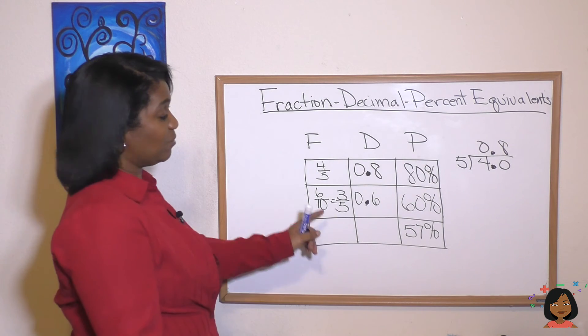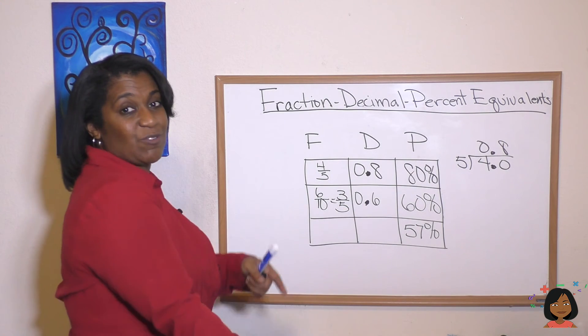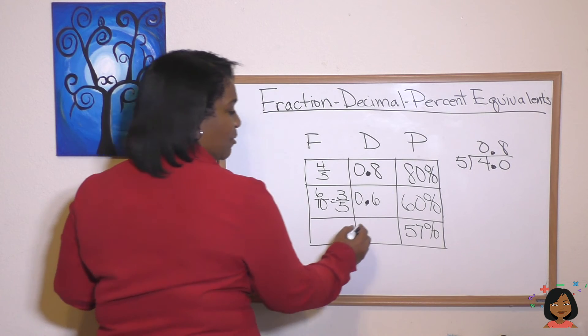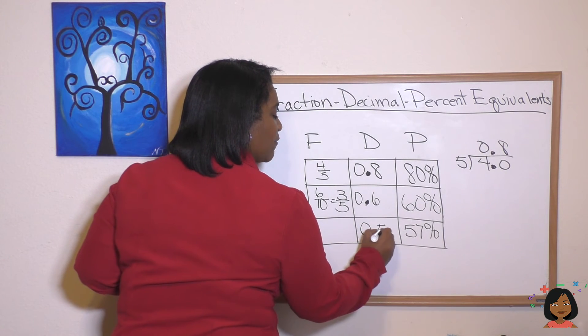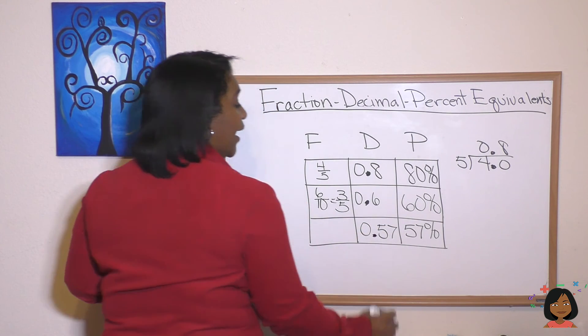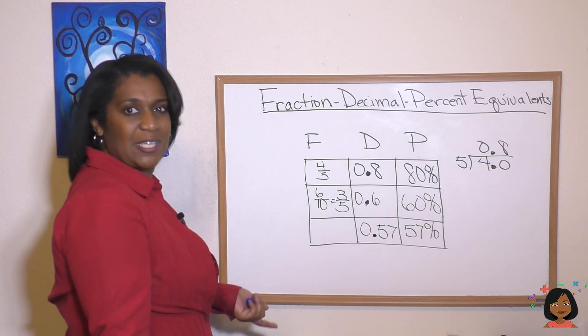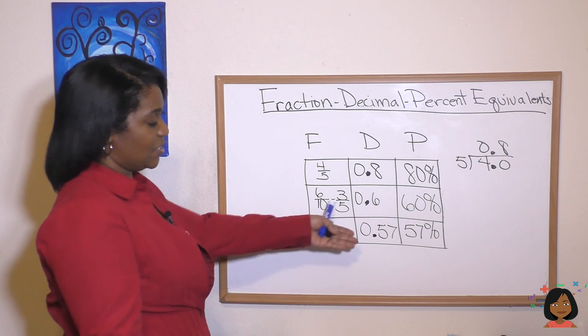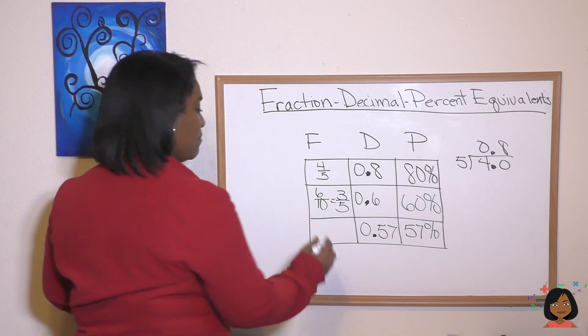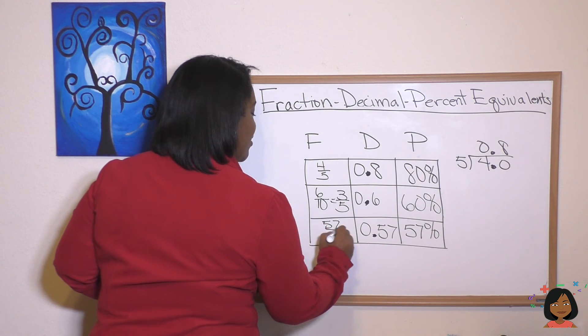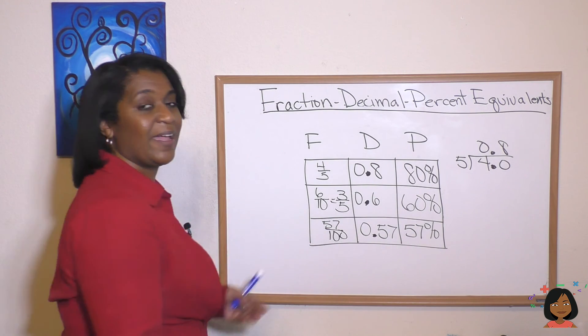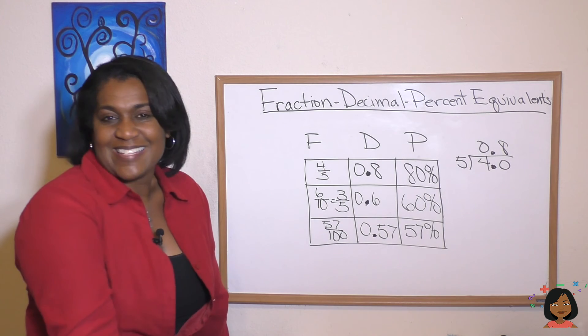Okay. 57 percent. If we just move two to the right to go that way we're going to move two to the left to come back to a decimal. So this is going to be 0.57. And for a fraction we're always looking at the place value. What is this? It's 57 over 100. And then we look to see. Can we simplify? And we cannot. And it's that simple.